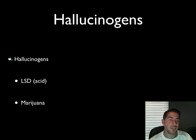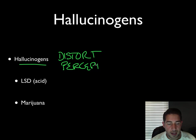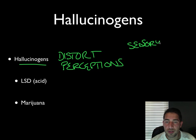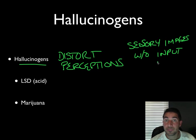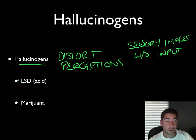Another category of drugs is hallucinogens. Hallucinogens distort perceptions and evoke sensory images without sensory input — you're seeing things and there's nothing coming in to trigger that. That's what a hallucinogen does. You hallucinate — that's where the word hallucinate comes from.